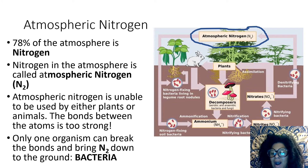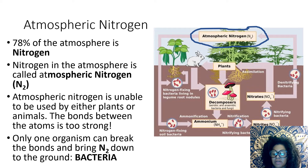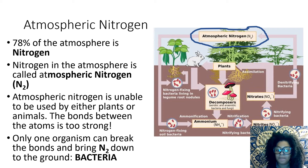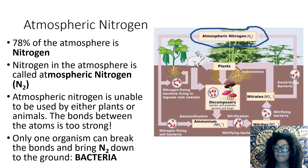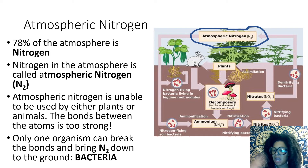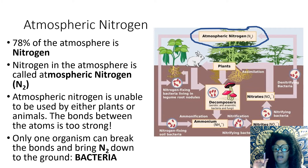If there's so much nitrogen, why is it a limiting nutrient? Why is it hard to find in soils or water if it's 78% of our atmosphere? That's because nitrogen as N2 cannot be used by organisms. Atmospheric nitrogen has a strong, strong bond that nothing can break — plants can't break it, animals like us can't break it. So you need special organisms that can break that bond, and that special organism is bacteria.